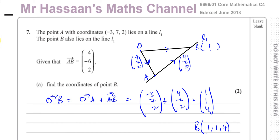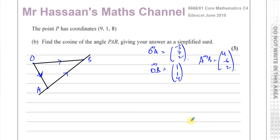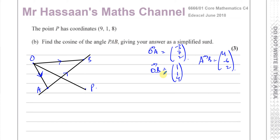Now moving on to part B. The point P has coordinates (9, 1, 8). Find the cosine of the angle PAB, giving your answer as a simplified surd. From O to P is the vector (9, 1, 8). I need to find the angle PAB — that's this angle here, which I'll call theta.